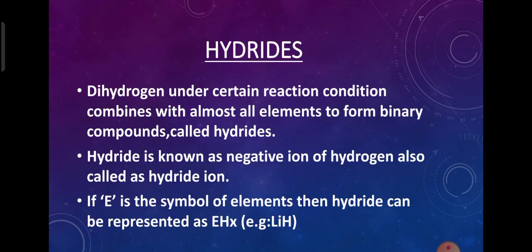Next, what are hydrides? Hydrides are binary compounds that hydrogen forms with other elements of the periodic table. Hydride is also known as the negative ion of hydrogen, called the hydride ion. Because of this negative charge, hydrides have reducing or basic properties.